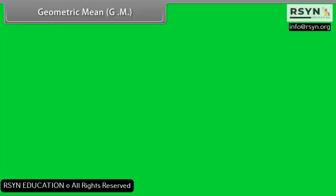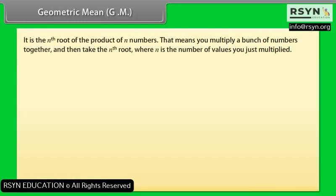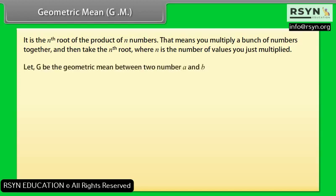Geometric mean (GM) is the nth root of the product of n numbers. That means you multiply a bunch of numbers together and then take the nth root, where n is the number of values you just multiplied.